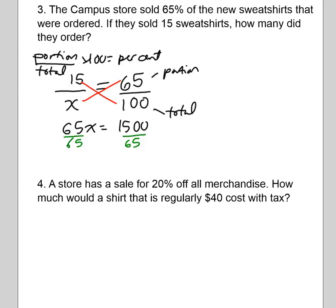You're going to get approximately 23. Sometimes with percents you get a decimal like 23.07 because we round. They didn't order 23.07 sweatshirts, so we say they ordered about 23 sweatshirts. Now let's look at the last one, which is a little bit tougher.